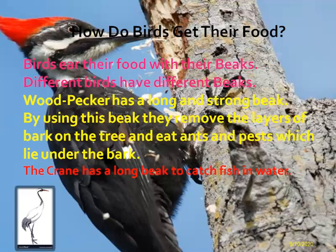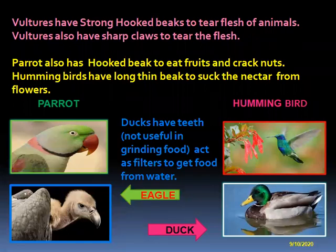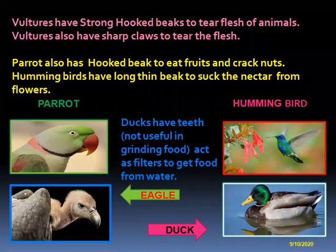Vultures have strong hooked beaks to tear the flesh of animals. Vultures also have sharp claws to tear the flesh — with the help of beaks and claws they tear the flesh. Can you see the vulture picture? How strong its beak is. The parrot has a hooked beak to eat fruits and crack nuts.